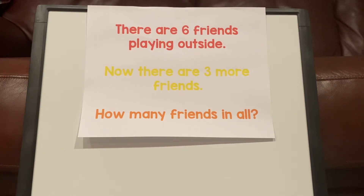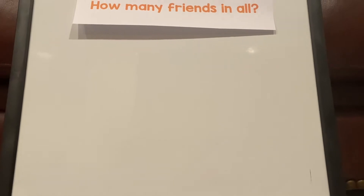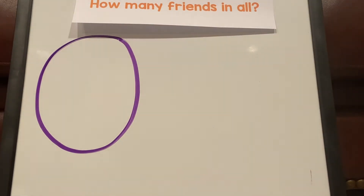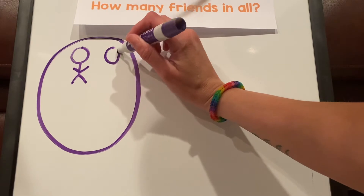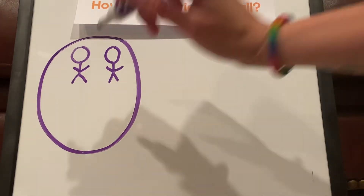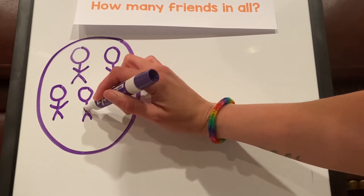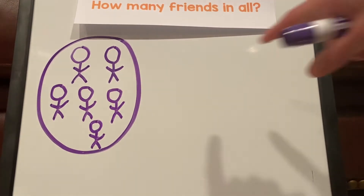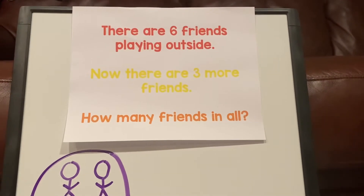Let's make our first group. How many friends are in our first group? There's six friends. So we're going to draw a circle for our first group, and we need to make six friends. I'm going to make my friends like that. One, two, three, four, five, and six. Let's check — one, two, three, four, five, six. That's right. There's six friends in that first group.